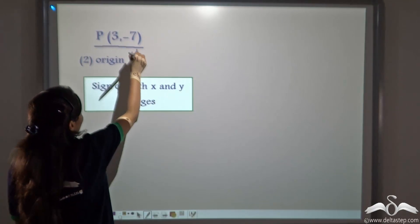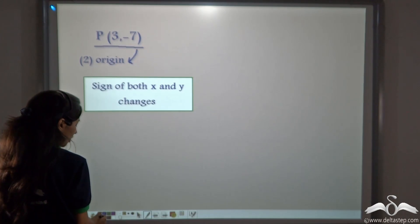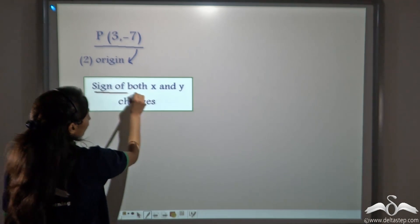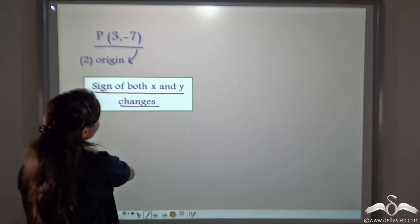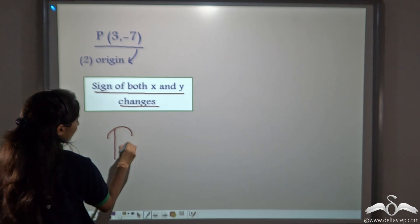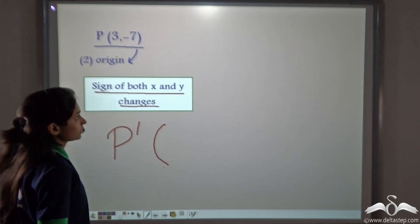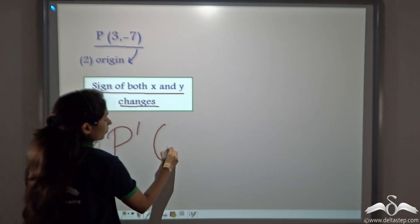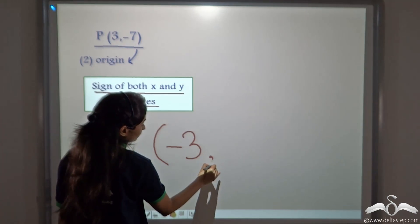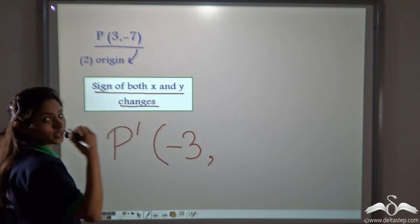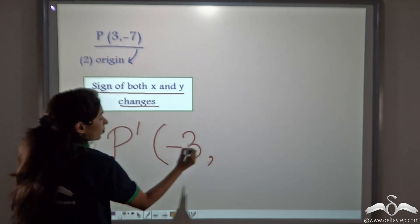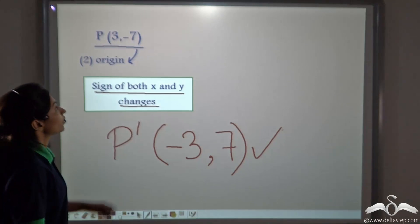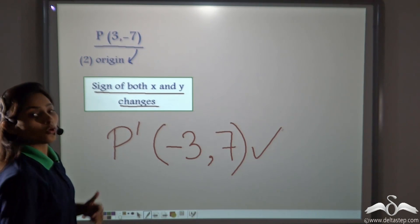Now let's do the last part — reflecting point P on the origin. When we reflect a point on the origin, the sign of both x and y change. So the image P′: x changes from 3 to minus 3, and y changes from minus 7 to 7. So P′ is (−3, 7).